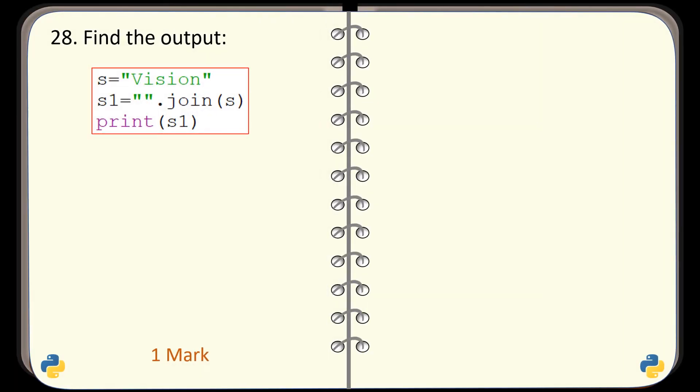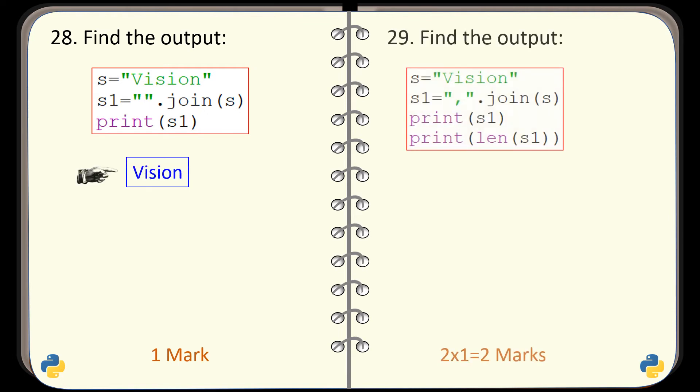Question number 28. Find the output generated by this code. And here is the correct output. Question number 29. Again, find the output generated by this code. And the correct output is this one.